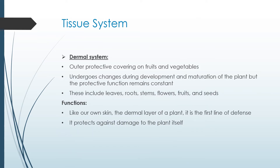The dermal system is the outer protective covering on fruits and vegetables. It undergoes changes during development and maturation of the plant, but its protective function remains constant. These include leaves, roots, stems, flowers, fruits, and seeds.